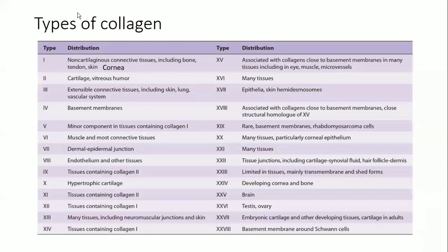We have about 28 types of collagen in our body. We will be stressing more on type 1, type 2, type 3, type 4, and type 7 — these are the most important applied biochemistry-related collagens. Type 1 is the most abundant subtype and is present in non-cartilaginous tissues including bone, tendon, skin, and cornea. Type 2 is mainly present in cartilage and also vitreous humor.